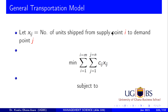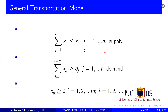You are minimizing a particular objective function. C represents the costs or the distance, and X-I-J represents the decision variables. We use X-I-J and C-I-J instead of X-I and C-I because it is from a certain section to a certain section. This is subject to constraints: a supply constraint where the total items transported should be up to the total supply, and a demand constraint where the total items demanded should be at least the total demand.